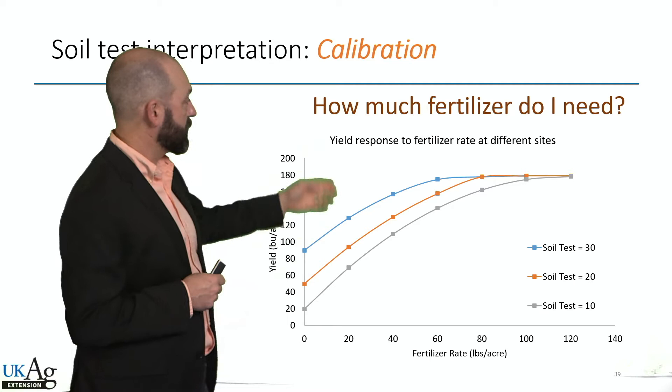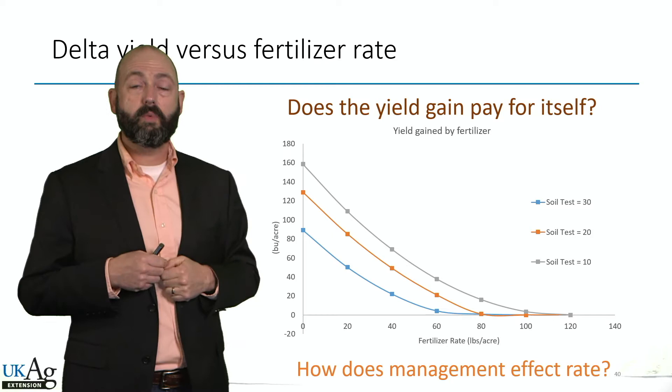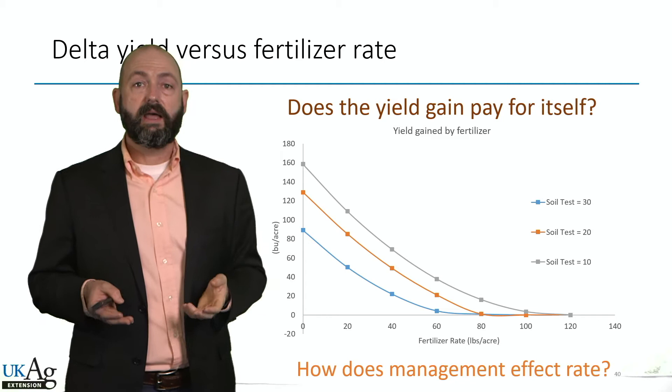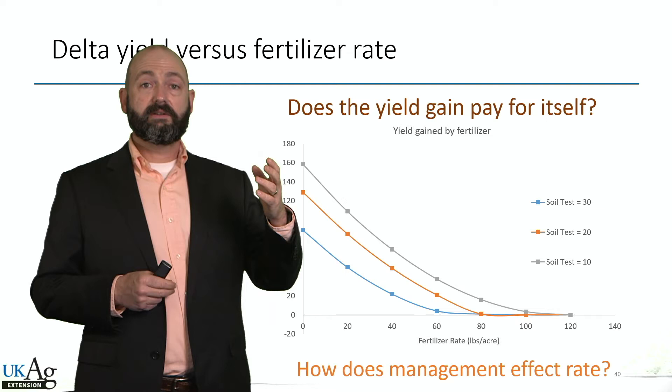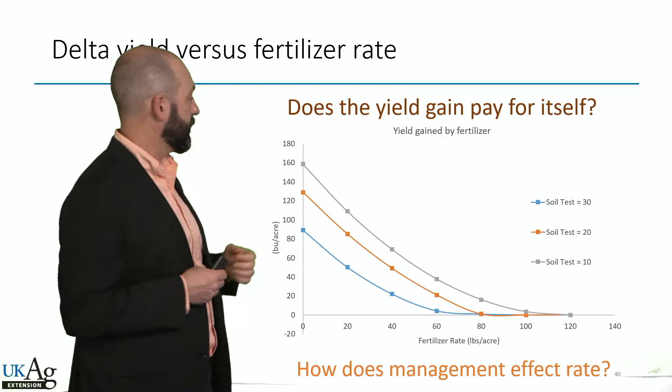These are those same numbers but we're looking at them a different way — we're looking at delta yield, or the yield gain at that fertilizer rate. We've got our three different fields with different soil test levels and we see that the higher the soil test, the less yield gain per unit of fertilizer applied. So it's a diminishing return function. As we approach maximum yield, at some point each incremental unit of fertilizer doesn't pay for itself.